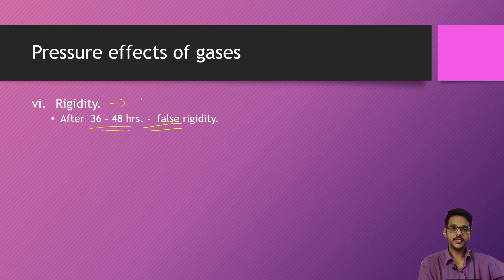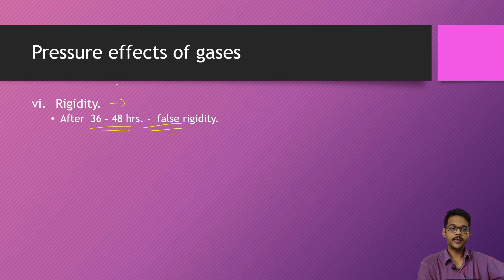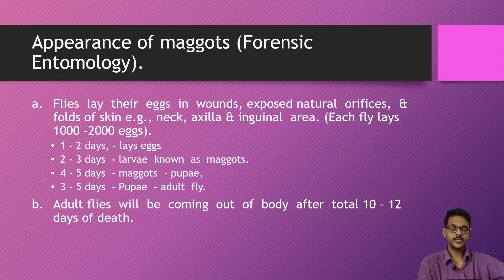This false rigidity can be distinguished from rigor mortis since rigor mortis occurs in muscles. With gas rigidity, gas can be pushed out — if there is a puncture wound, gas may be released and the body will deflate. This rigidity is therefore false.